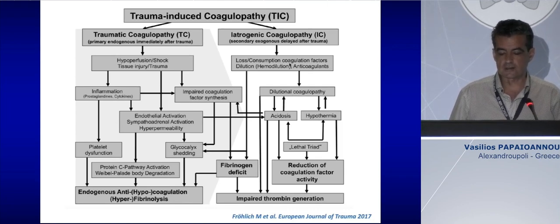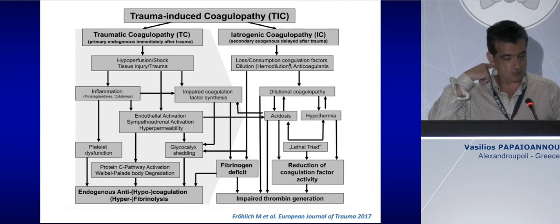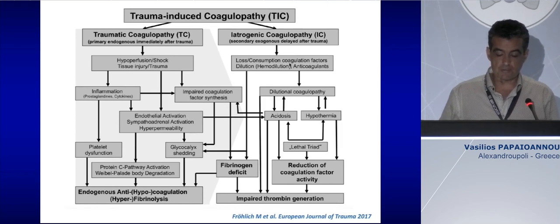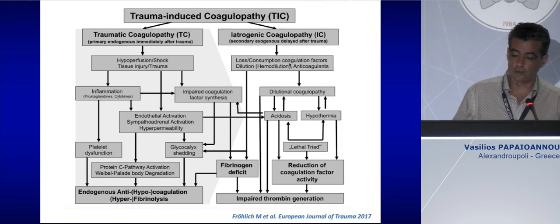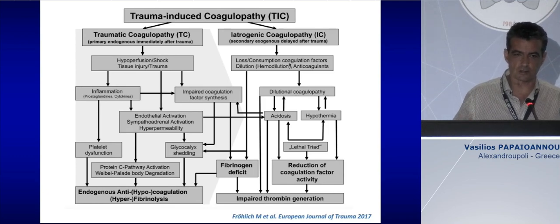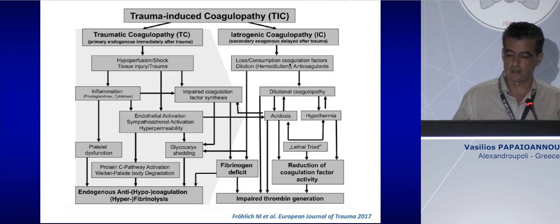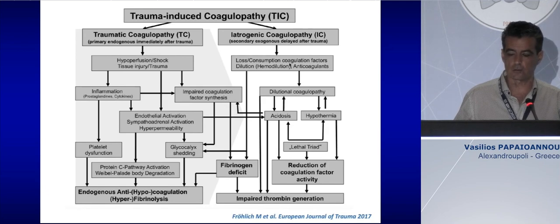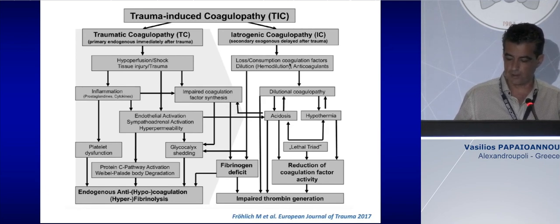Traumatic coagulopathy induces glycocalyx shedding, platelet dysfunction, activation of the protein C pathway, and endogenous hyperfibrinolysis. Then there is the iatrogenic coagulopathy, which is secondary and exogenous, occurring with a delay after trauma. It is mostly affected by vigorous fluid administration and dilution of coagulation factors, and in association with acidosis and hypothermia — the lethal triad — reduces the activity of coagulation factors, impairs fibrinogen activity, and ultimately impairs thrombin generation.